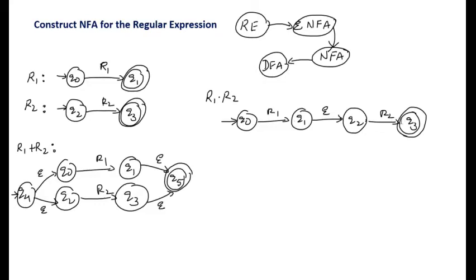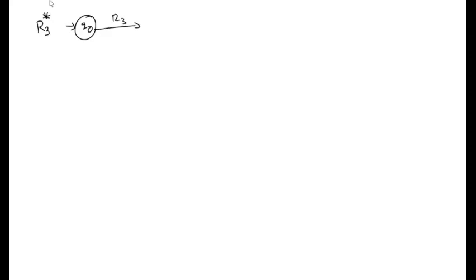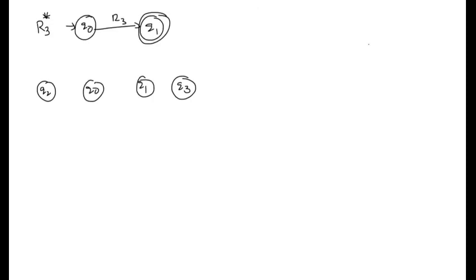Now we will construct the finite automata for r3 star. First we construct the FA for r3: q0 is the starting state, q0 on r3 moves to q1, and q1 is the final state. For r3 star, we take two extra states q2 and q3. We have q0 on r3 moving to q1, q2 on epsilon moving to q1, and q1 on epsilon moving to q3. q2 is the starting state and q3 is the final state.